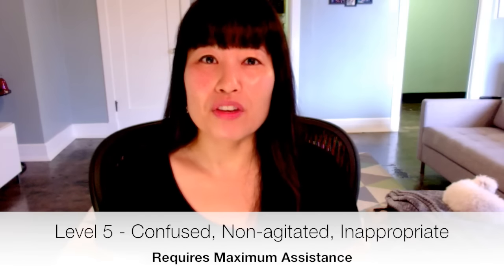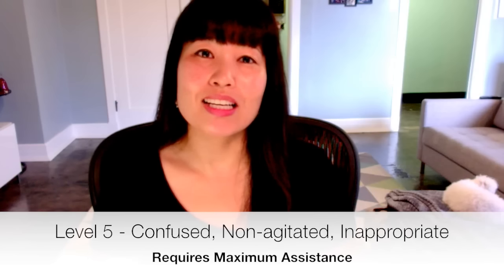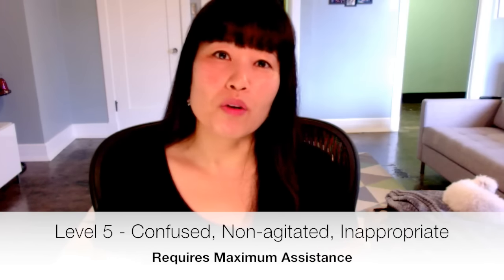Level five: they're confused, but no longer agitated — instead they're inappropriate, requiring maximum assistance. Inappropriate might look like a patient wandering about not knowing where they're going, with a vague intention of going home, or an inappropriate use of objects — for example, given a toothbrush they might try to brush their hair instead. At this level, the patient is able to perform highly familiar tasks with enough structure and cues provided.